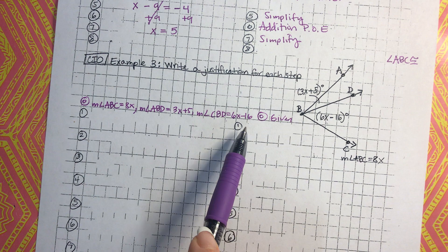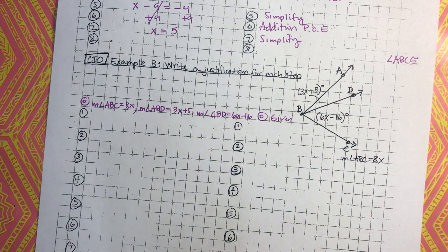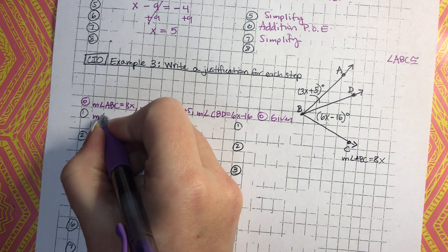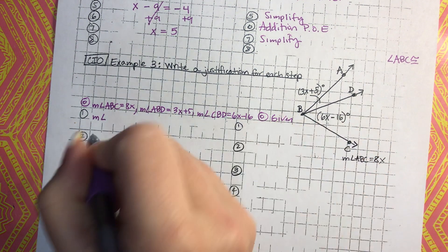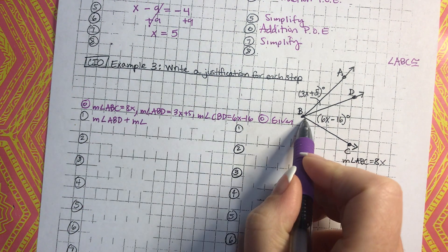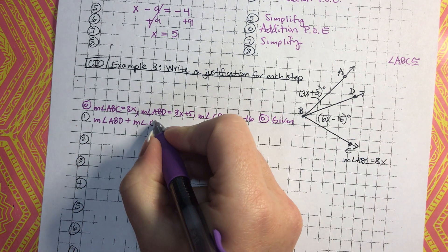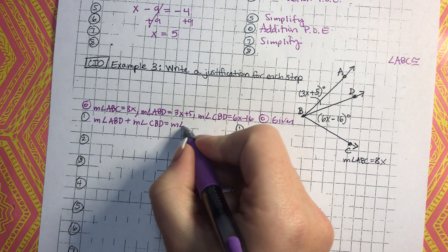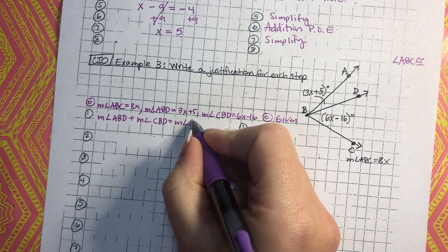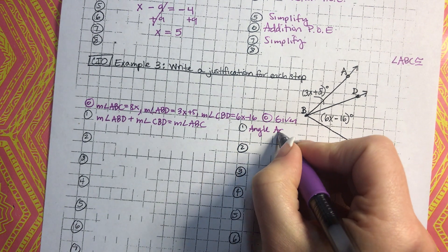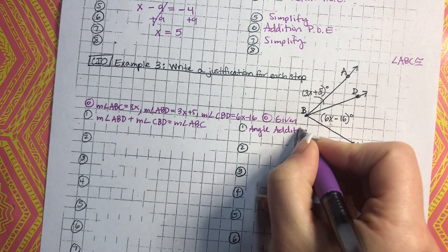Now that we have all the given information written down, we can use the angle addition postulate. So: the measure of angle ABD plus the measure of angle CBD equals the measure of angle ABC. That is the angle addition postulate.